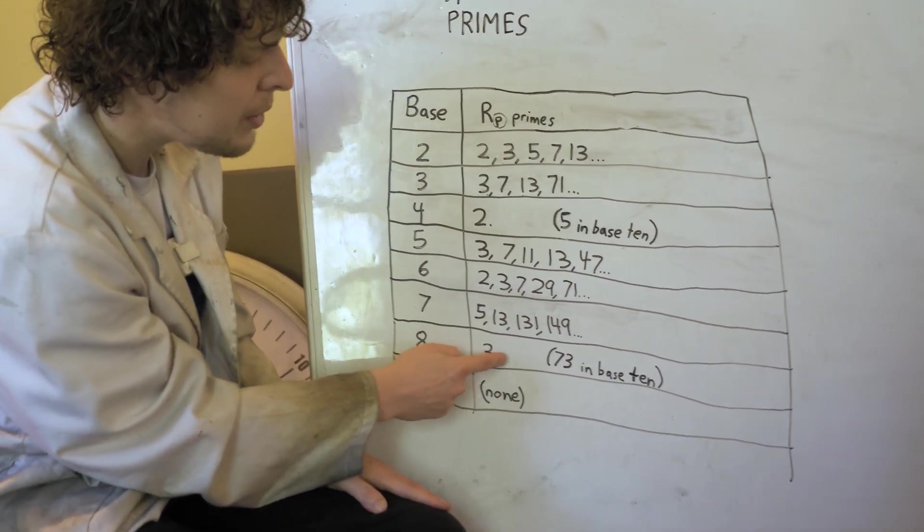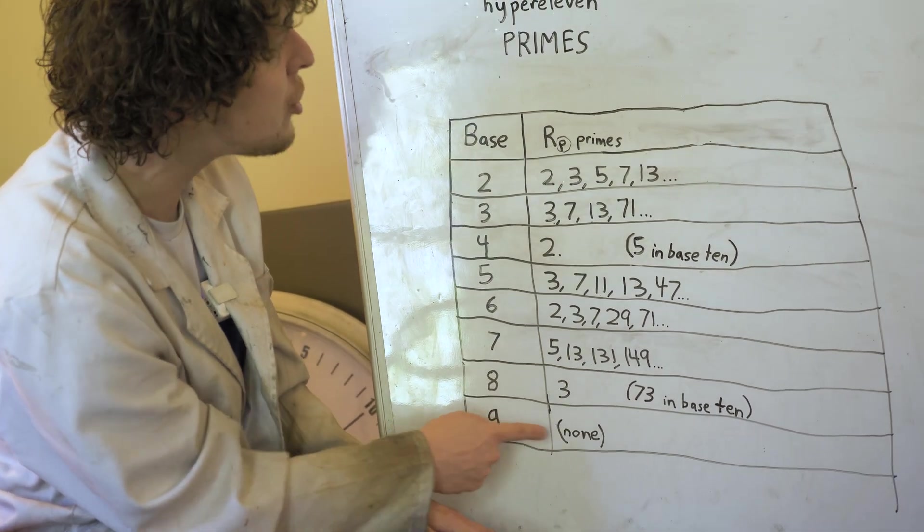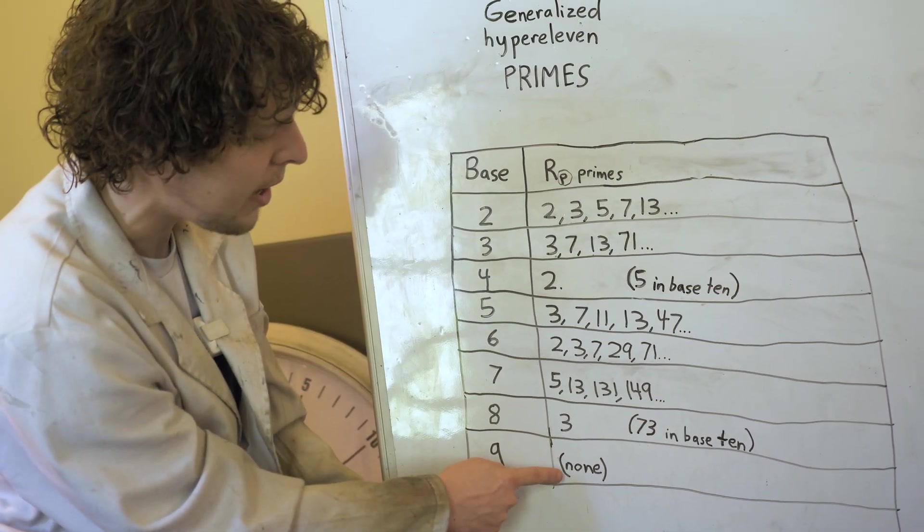And eight only has a single 111, which is the number 73 in our system. And base nine has no hyper 11 primes.